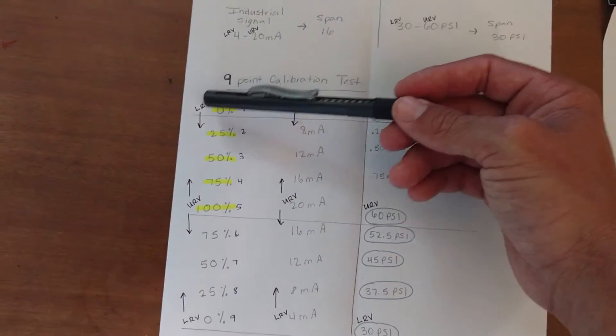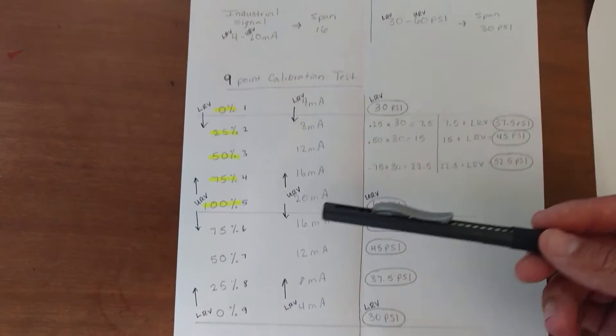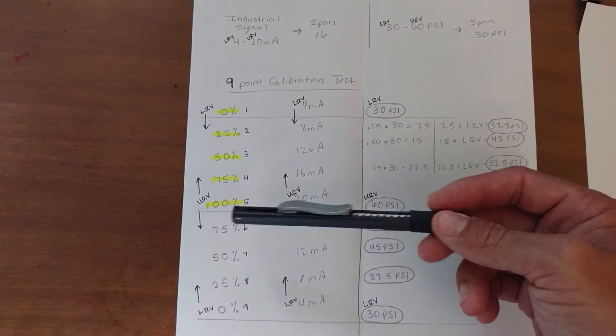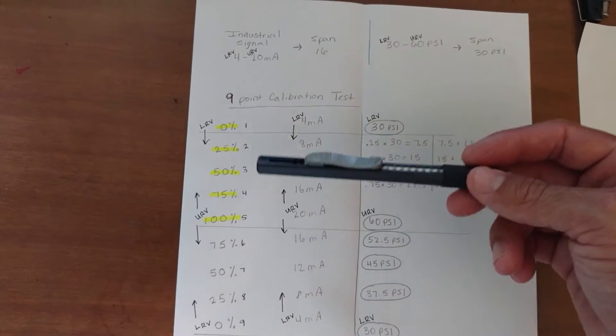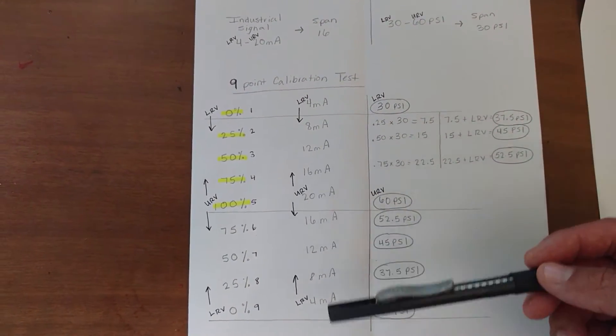Really, all we have to focus on when we're trying to find our nine points are the first five points, because these next four points are just in reverse of these. As we can see, 4, 8, 12, 16, 20, 16, 12, 8, 4.